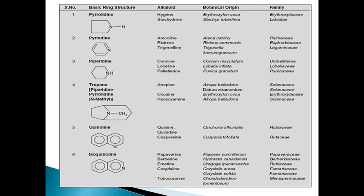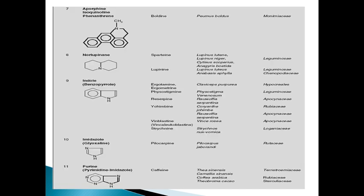The sixth class is isoquinoline alkaloids. In all these, at least one nitrogen atom is present — they are nitrogenous compounds having a heterocyclic ring, six-membered or five-membered, containing nitrogen. The position of nitrogen is at the third position of every ring. An example is papaverine; Papaver somniferum is the botanical origin and Papaveraceae is the family.